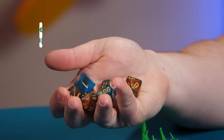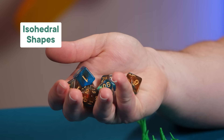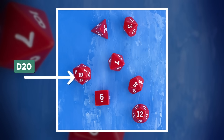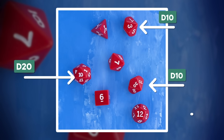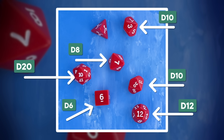The standard D&D dice set comes with seven dice and six different isohedral shapes, meaning they have the same geometry on all sides. There's the D20 with triangle faces, two D10s with diamond faces, a D12 with pentagon faces, a D8 that looks like two back-to-back pyramids, your classic D6 cube, and a D4 that's a painfully sharp pyramid.